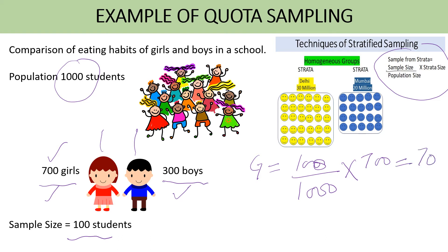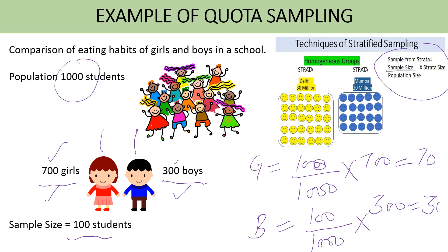In the same way, I can calculate for boys. For boys, the sample size would be 100 divided by population size 1000, multiplied by subgroup size 300, which comes out as 30. This is the second step of quota sampling.